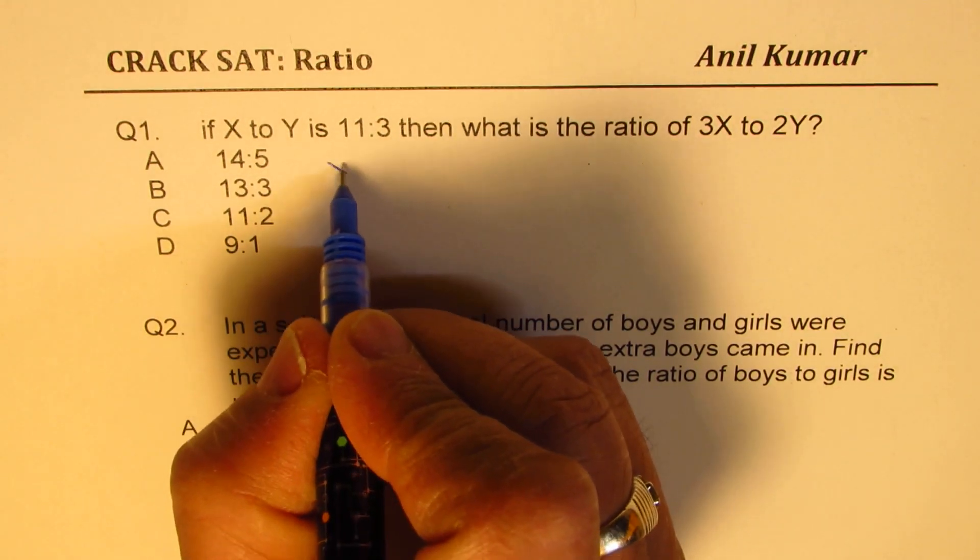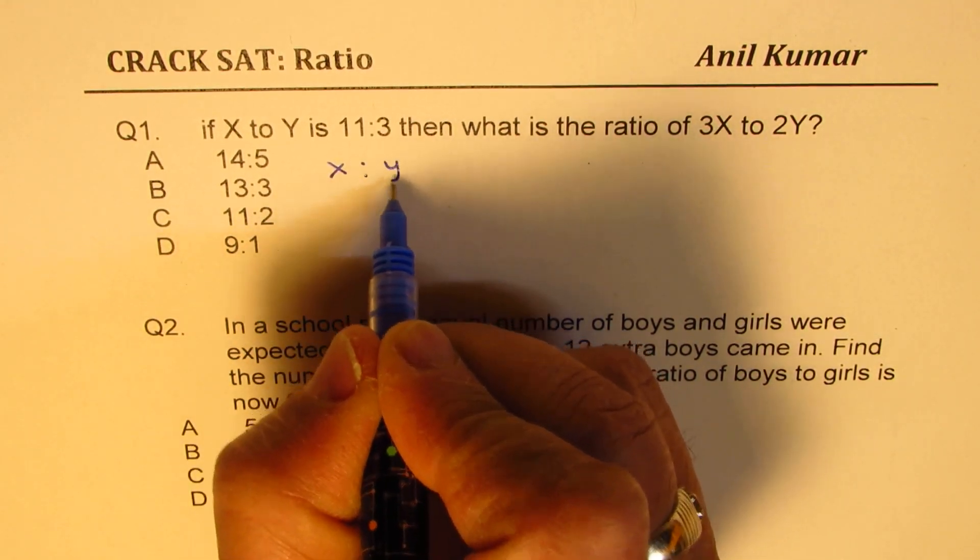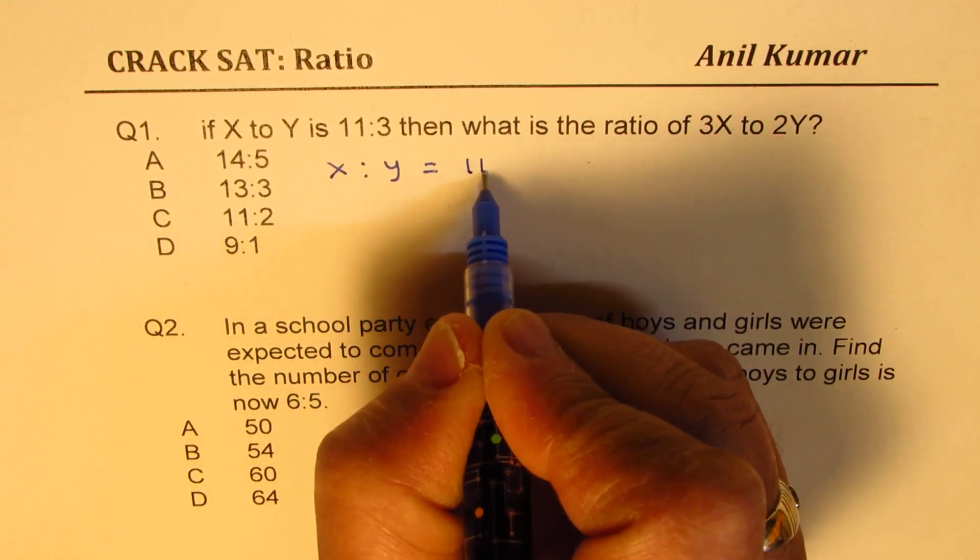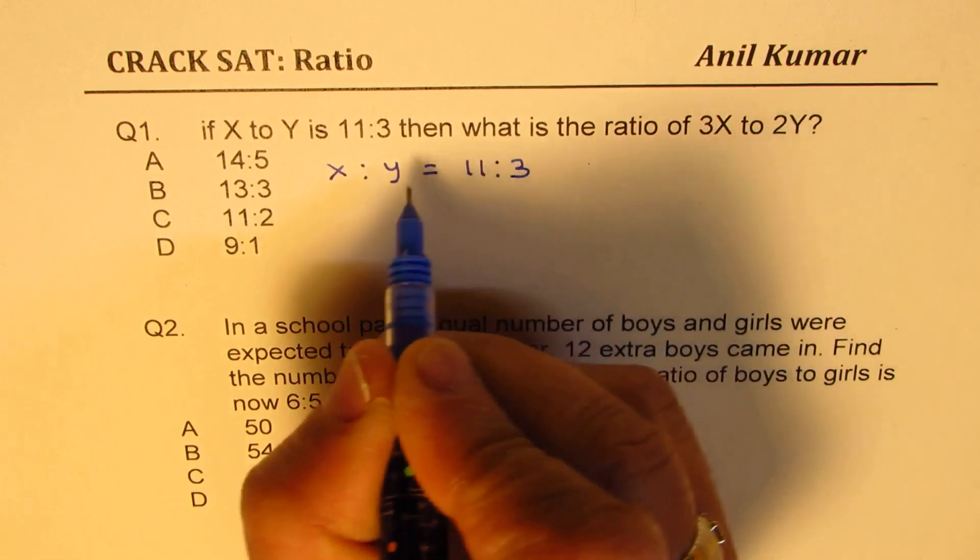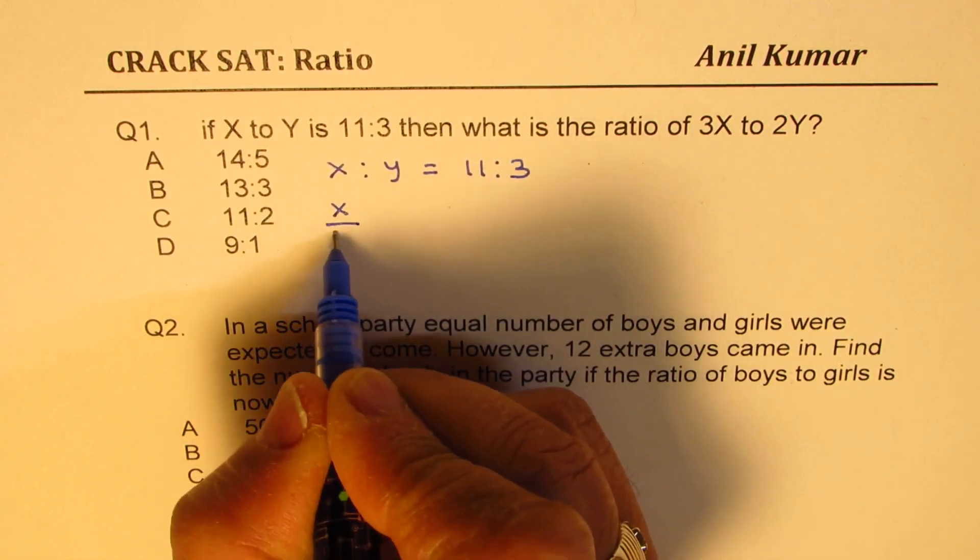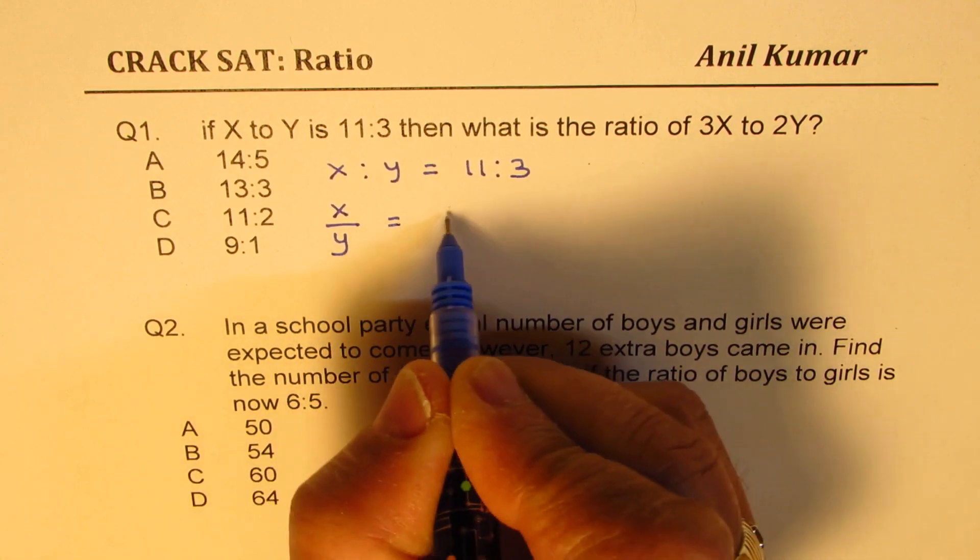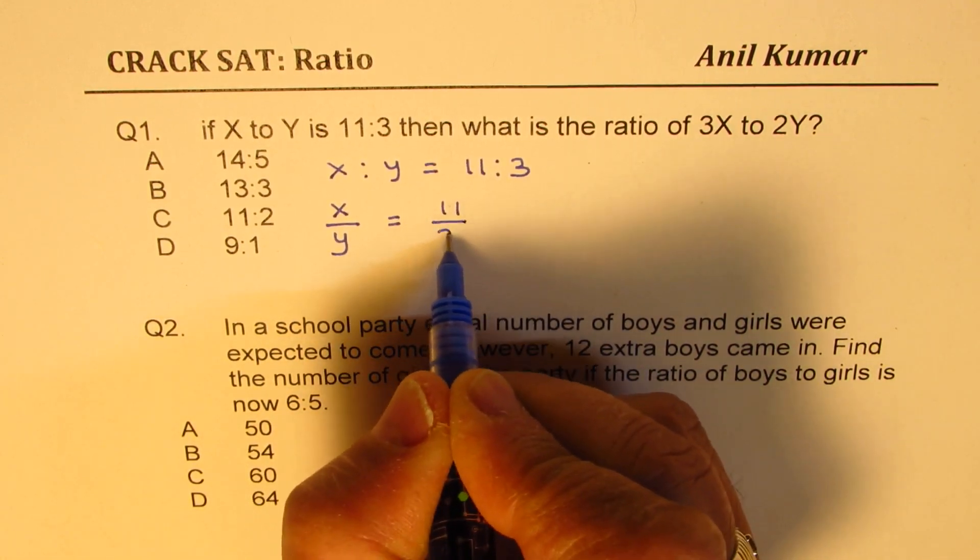So we are given X to Y is equal to 11 to 3. So we could write this as X over Y is equal to 11 over 3.